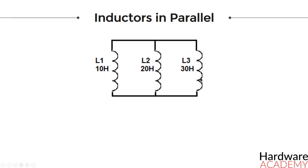However, when inductors are placed in parallel, the equation is more complex. The equation to calculate the total inductance is the following. And this might look familiar to you since it's the same equation when capacitors are placed in series or when resistors are placed in parallel. Given this equation, the total inductance of this circuit would be 5.45 Henries.